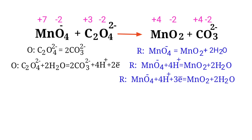Make electron gain equivalent to electrons lost. The electrons lost in the oxidation half reaction must equal the electrons gained in the reduction half reaction. The oxidation half reaction has two electrons and the reduction half reaction has three electrons. To equalize, multiply the oxidation half reaction by 3 and the reduction half reaction by 2, giving 6 electrons in both reactions.